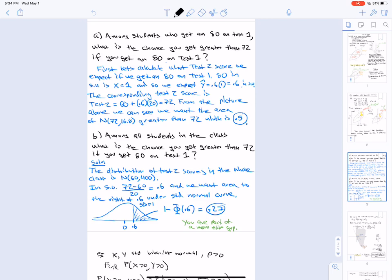So that's 1 minus phi of 0.6, which is 0.27. So you're more of an elite group if you get an 80 on test 1, you get 50% of your colleagues who got an 80 on test 1 will get greater than or equal to a 72, whereas only 27% of your classmates overall will get greater than 72.